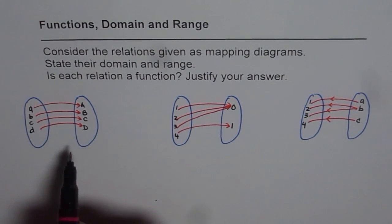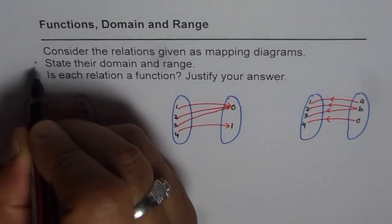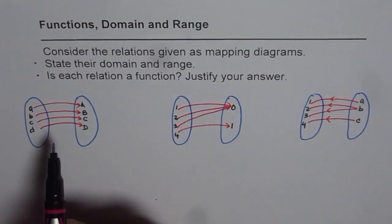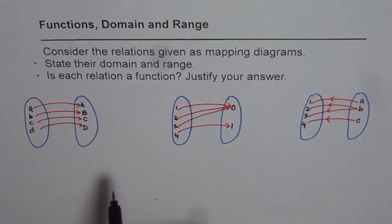We have three different mapping diagrams, and what we need to do here is state domain and range. We need to figure out is each relation a function or not, and we need to justify our answer.